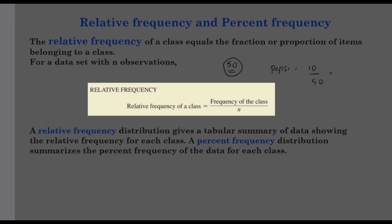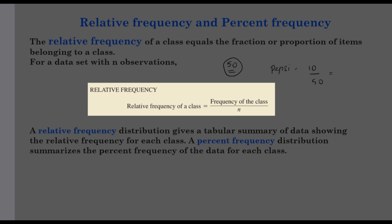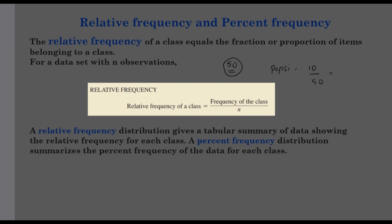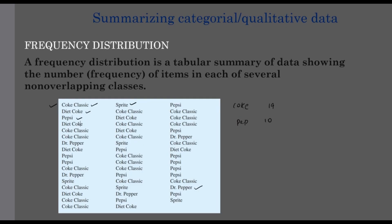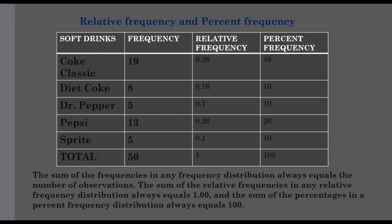The relative frequency distribution gives a tabular summary of data showing the relative frequency of each class. When we go to percent frequency, the percent frequency distribution summarizes the percent frequency of that data set. So let's go with an example. Coke Classic, Diet Coke, Pepsi — we can calculate that data and calculate the frequency. Coke Classic is 19 times, Diet Coke 8, Dr. Pepper 5, Pepsi 13, Sprite 2. We have a total of 50 items.